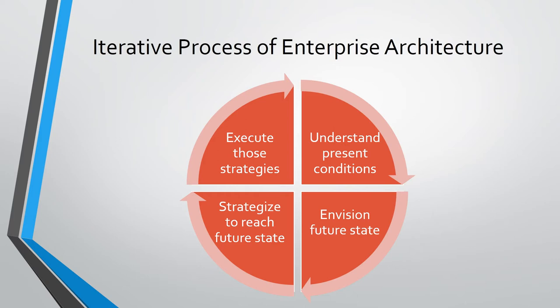This is a diagram of a typical process of enterprise architecture, and it bears close resemblance to the process of business transformation management. They both require the proponents of change to consider the big picture first, so that they can create specific directions in order to bring about that change.